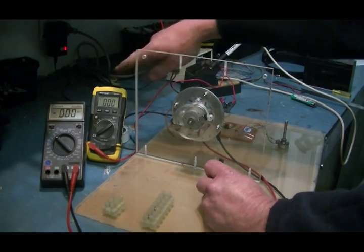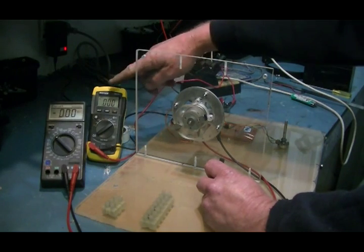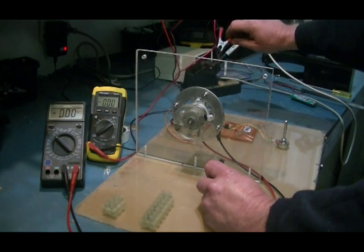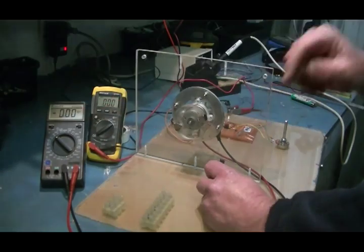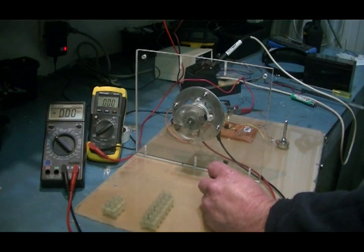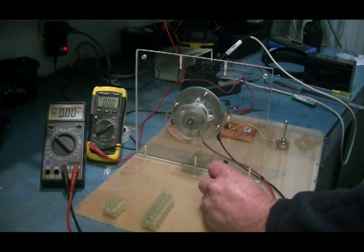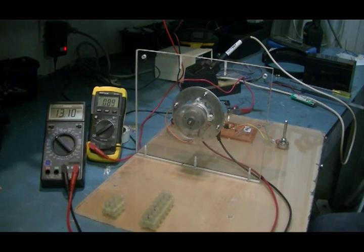This meter here is our amp draw coming out of the power supply through the meter and then into the PWM. And this meter here will be reading the voltage across the motor terminals. So I will start it up and we will let it settle. We are about 82-83 milliamp draw and about 13.1 volts across the motor.